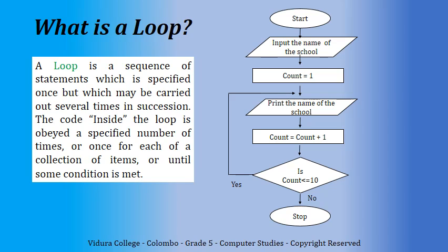Likewise, the flow will be looped until the value of the counter reaches 11. When the value of the counter reaches 11, the condition becomes false inside the diamond. Now, the flowchart stops.